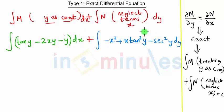y as constant. In this part we will neglect the terms which has x. So here we have x square, so this will be neglected. Here we have x into tan square y, so this term will also be neglected. So we are remained only with minus x square y. Now we are going to take this